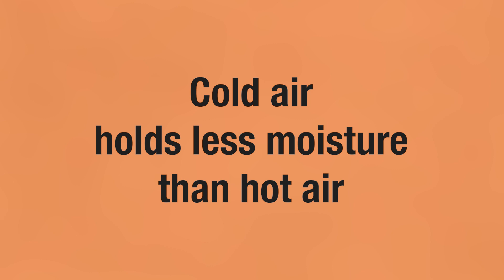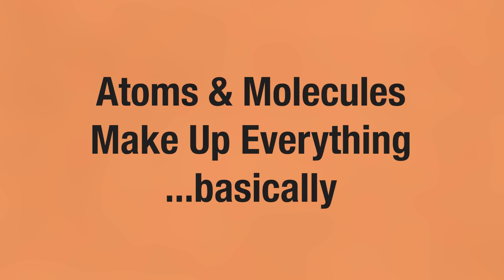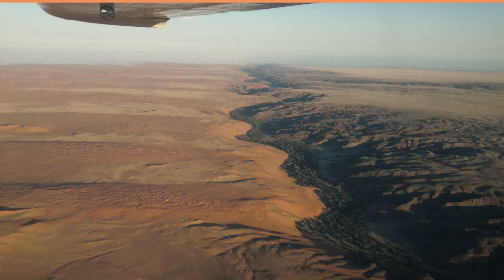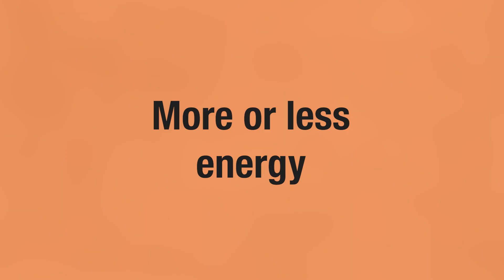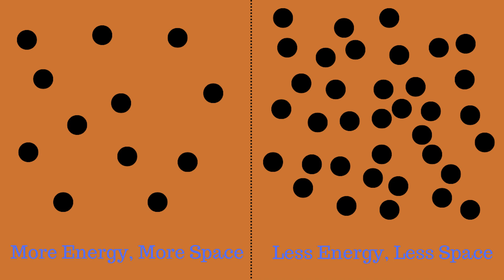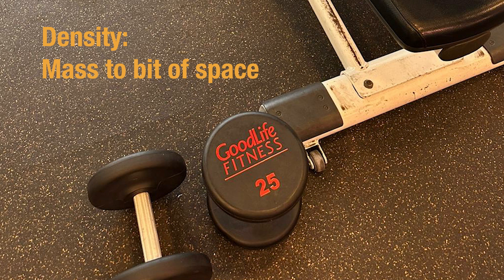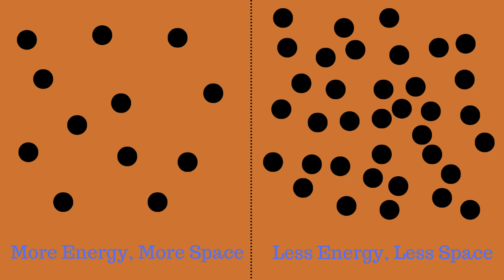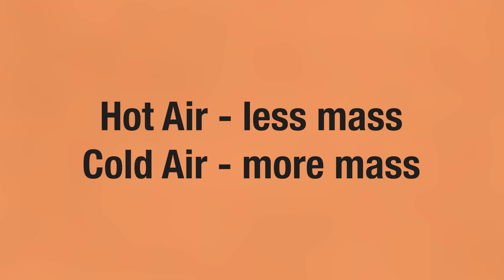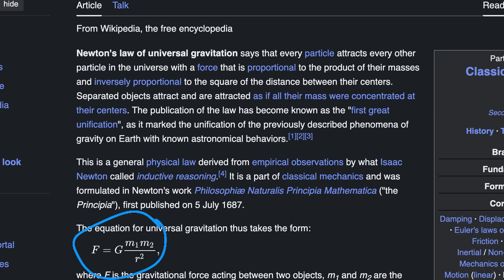If air at 80% relative humidity were cooled without losing moisture, the percentage would rise, because colder air can't hold as much. Why does hot air rise? Atoms and molecules make up everything — including the air. These molecules have specific amounts of thermal energy; when they have more thermal energy they move more, meaning higher-energy air has more space between molecules. Density means how much mass is in a given space, and hot air has less mass than cold air.